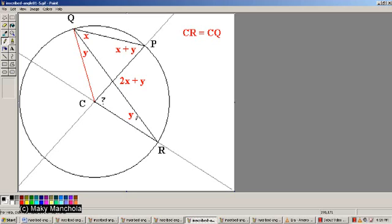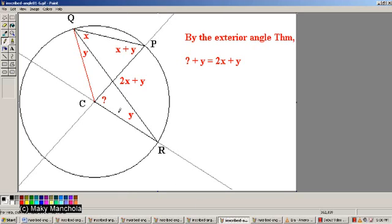and Y are remote interior angles to this angle over here. So what's the relationship between the unknown, Y, and 2X plus Y? The sum of the remote interior angles is the same as the exterior angle.